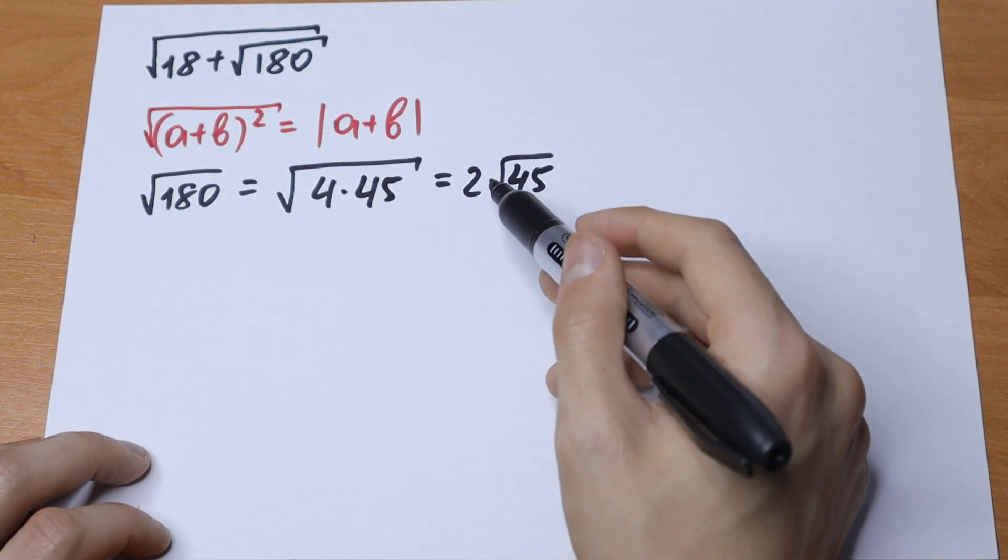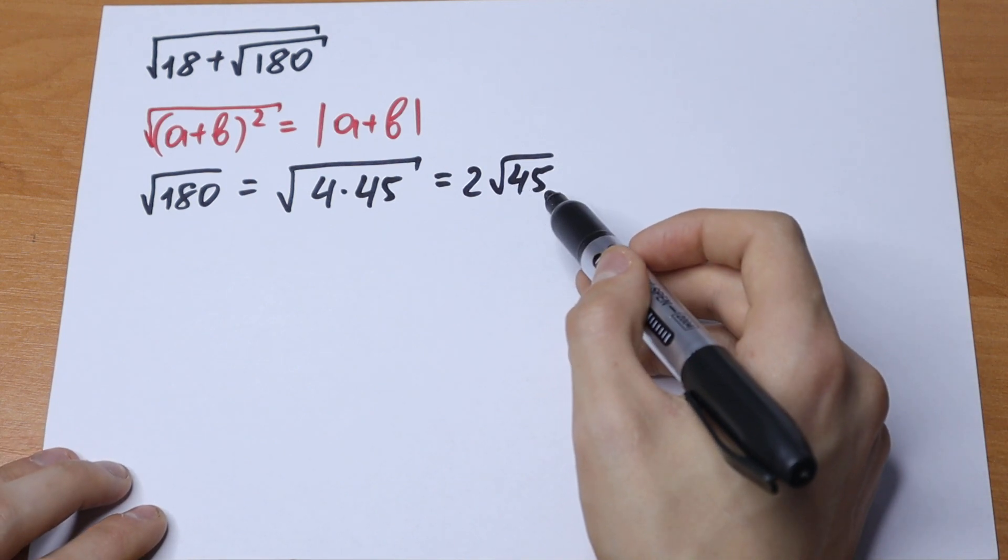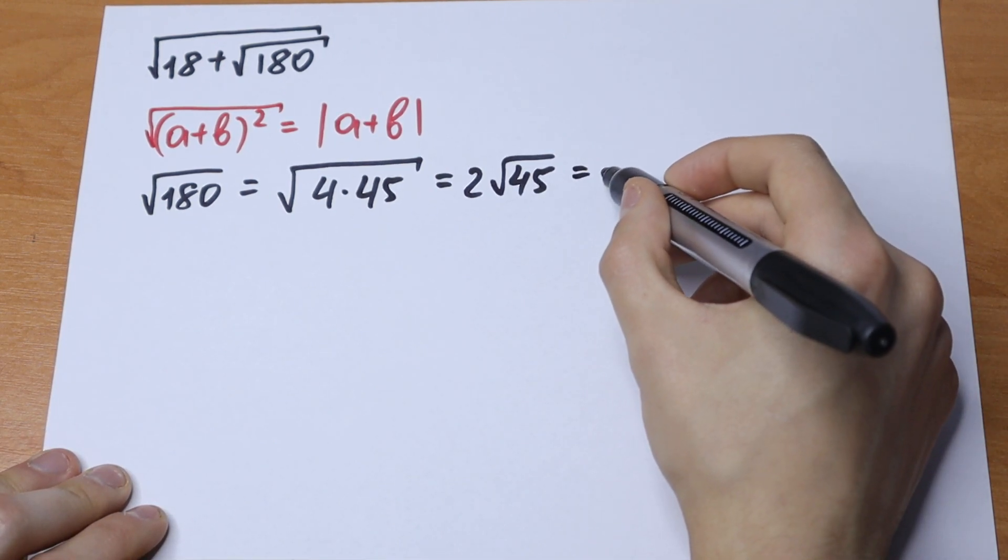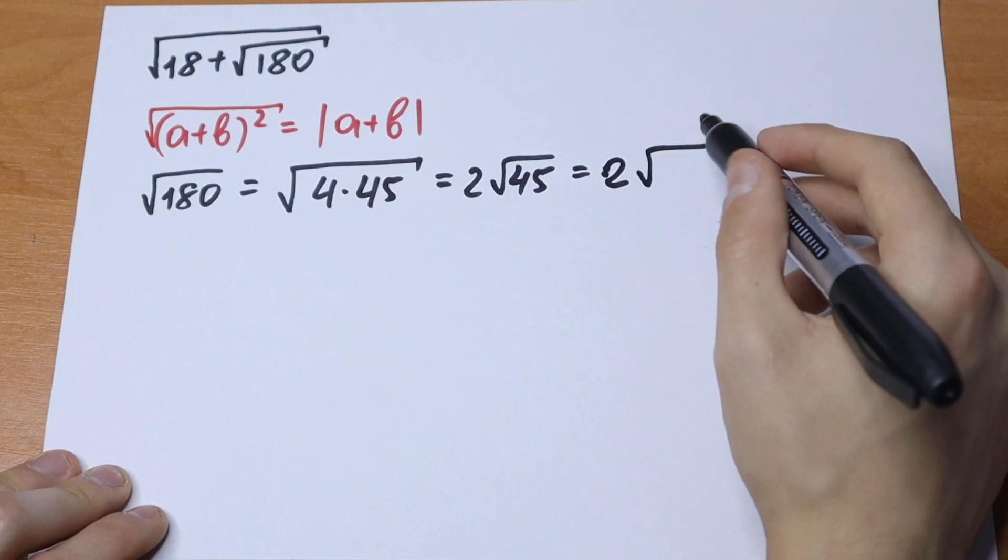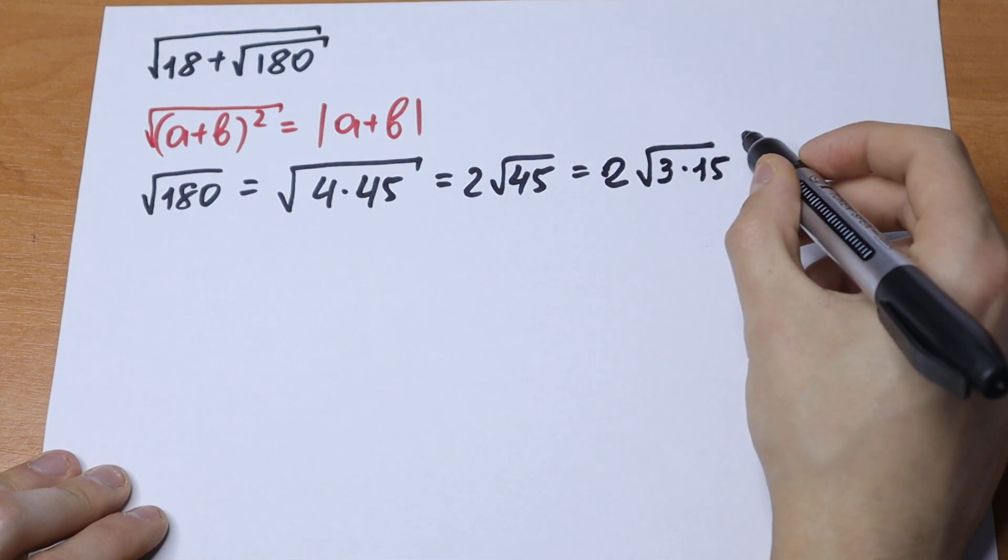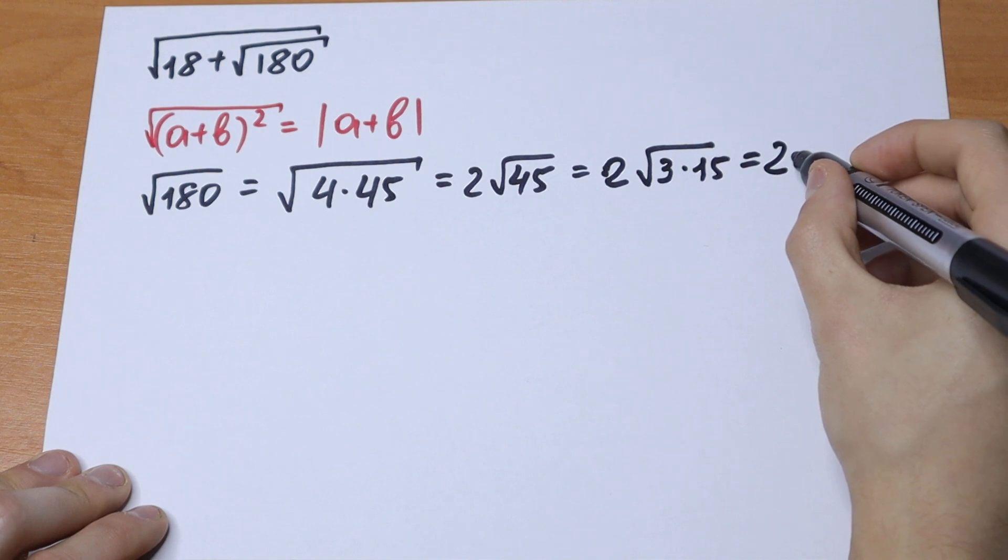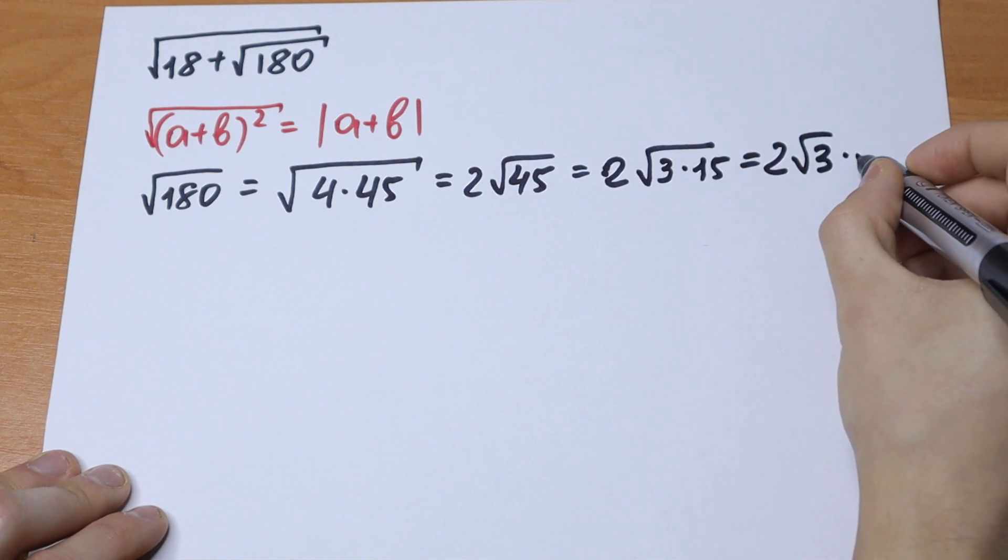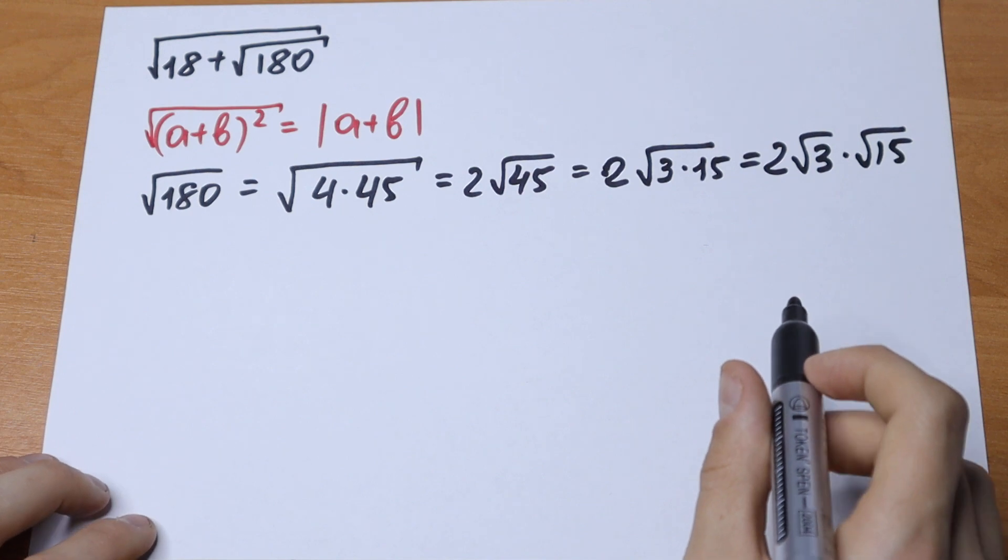Why is this good? I'll show you a little bit later. Let's represent this 45 as 3 times 15. So the final simplification is 2 square root of 3 times square root of 15. We just simplified this 180.